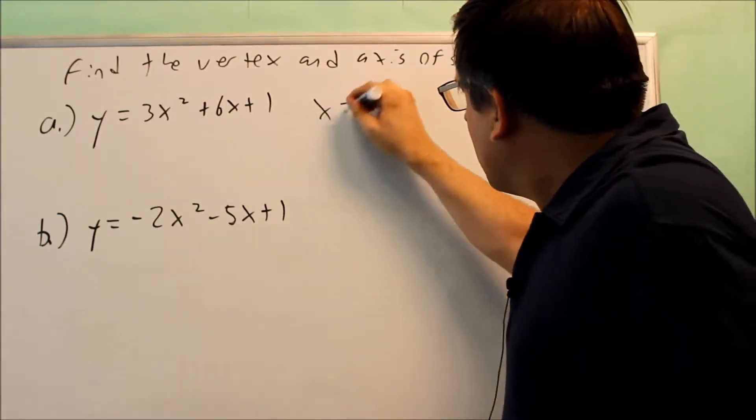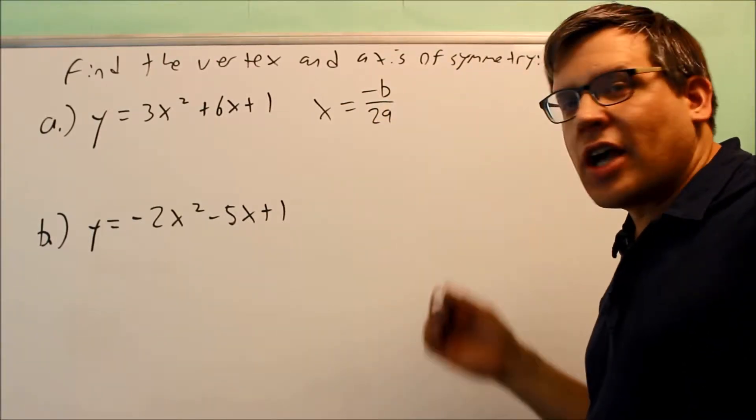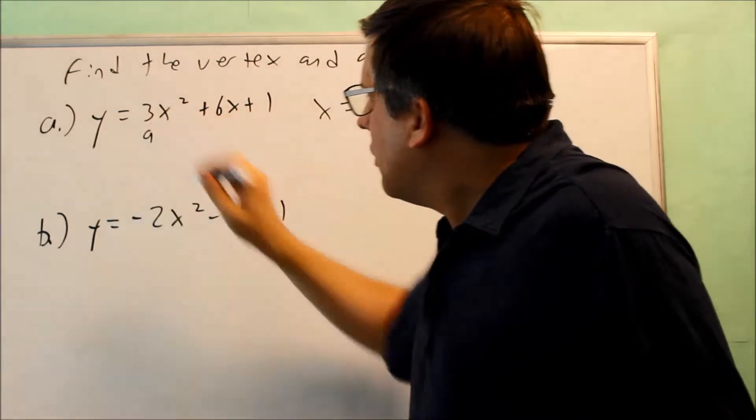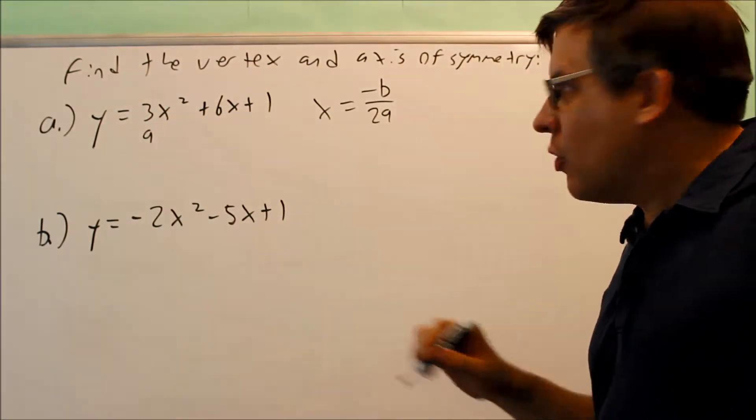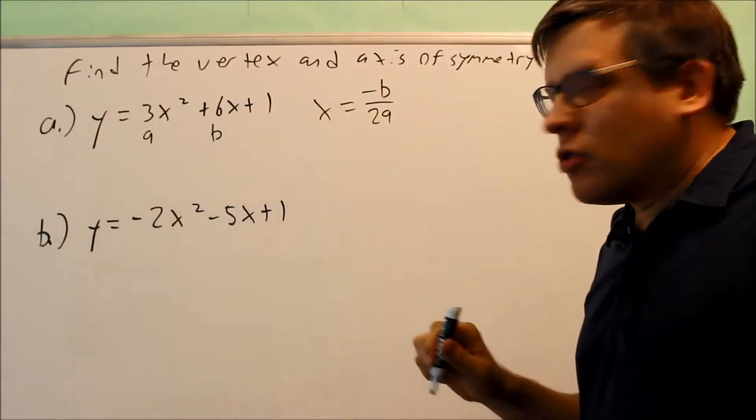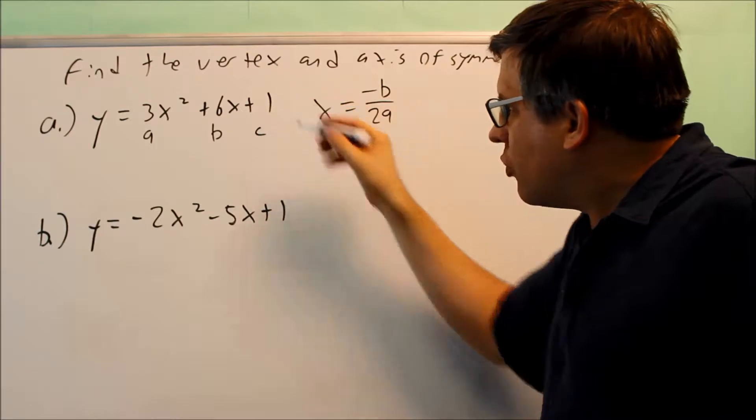The formula for getting the x-coordinate of the vertex is negative b over 2a. The a would be the number in front of the squared variable, b is in front of the first degree x term, and then your c is the number on the end. We don't use c in this case, but that's what it would be labeled as.